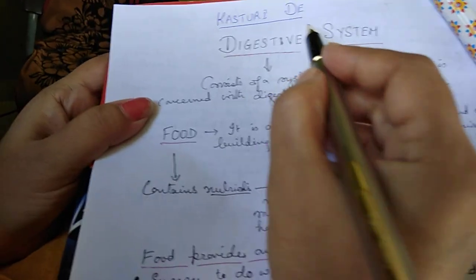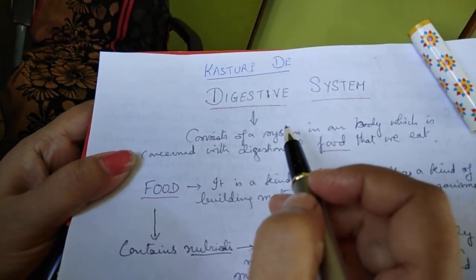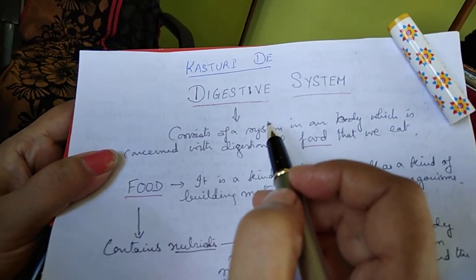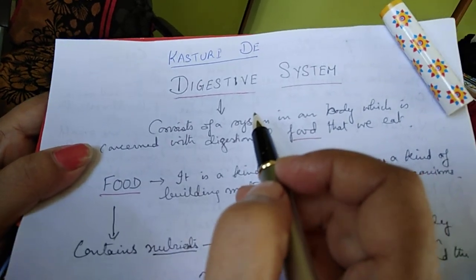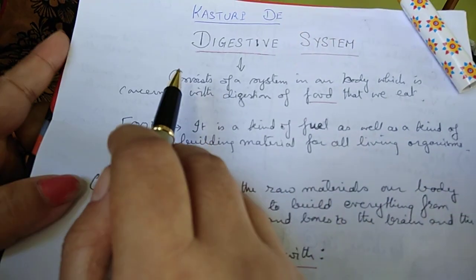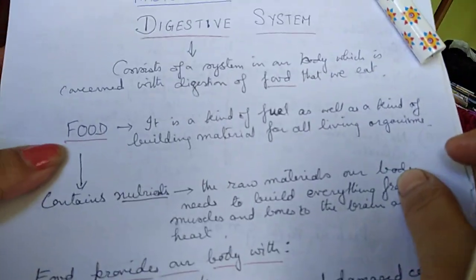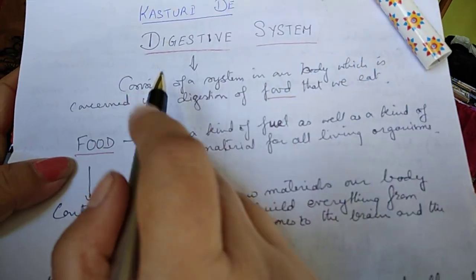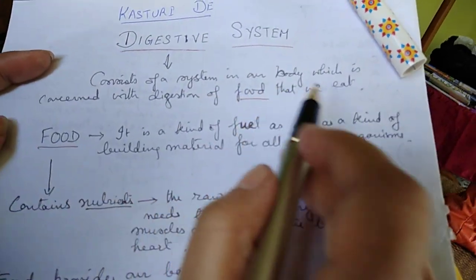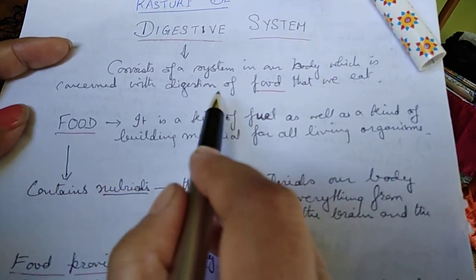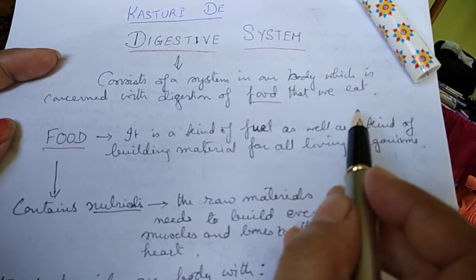This is Kasturi Desh speaking on the digestive system from the ICSC syllabus. The digestive system consists of a system of organs in our body which is concerned with the digestion of food that we eat.